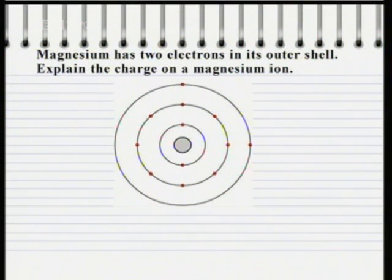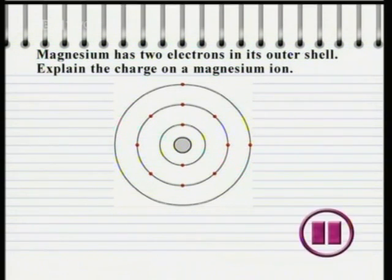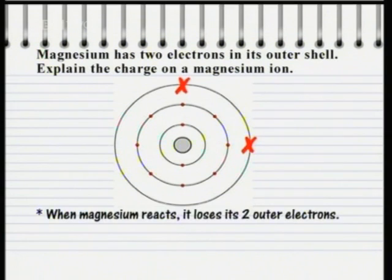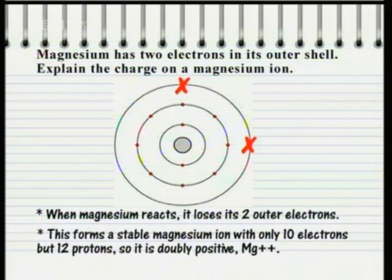Here's a question about atomic bonding. A magnesium atom has two electrons in its outer shell. When it reacts, it loses both of those electrons. This creates a magnesium ion with a stable outer shell of eight electrons, and means the resulting magnesium ion has only ten negative electrons but twelve positive protons — so it's doubly positive: Mg²⁺.